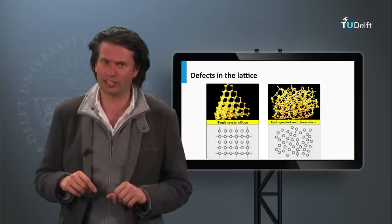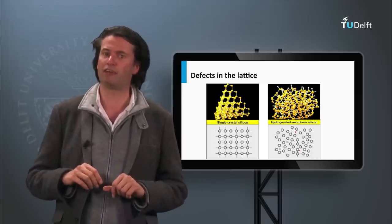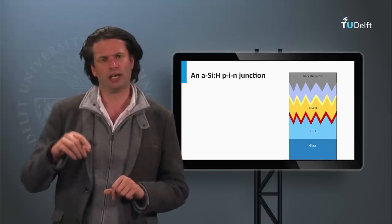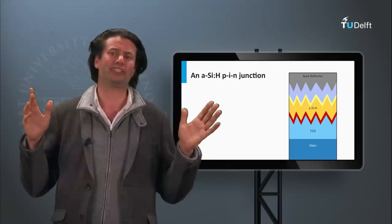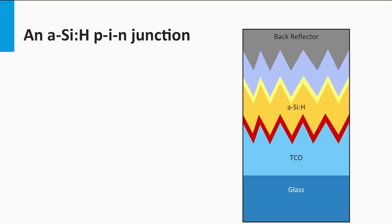A typical amorphous silicon solar cell is therefore not based on a p-n junction like wafer-based crystalline silicon solar cells. The amorphous silicon solar cell is based on a p-i-n junction. The absorber layer is an intrinsic amorphous silicon film sandwiched between thin layers of p-doped and n-doped amorphous silicon. The p- and n-doped layers create a built-in electric field over the intrinsic absorber layer.